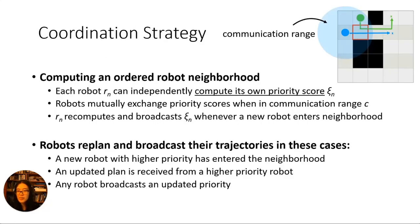I'll now explain the coordination strategy. We require that each robot is able to compute its own priority score. We define a communication range, and when robots come into range of each other they mutually exchange their current priority scores.